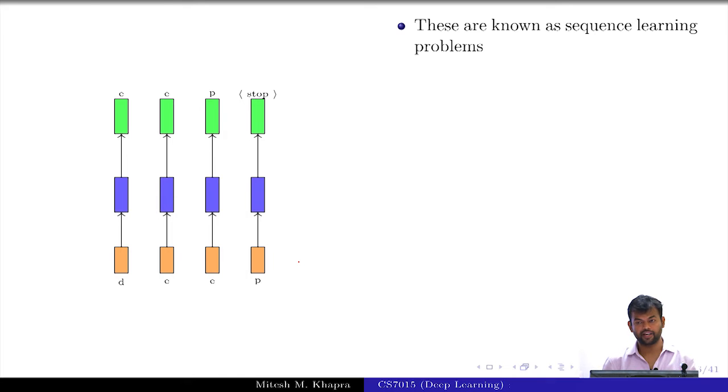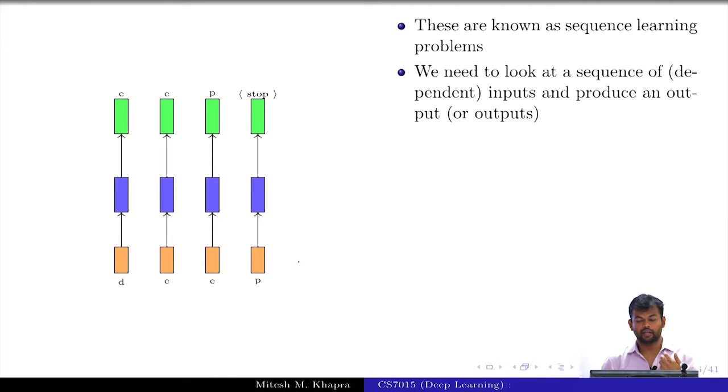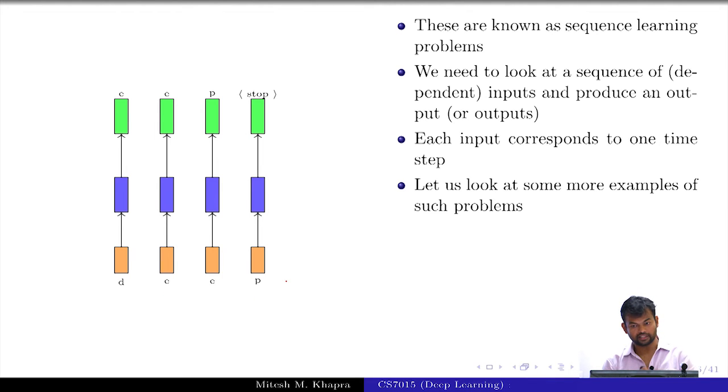These problems are known as sequence learning problems where you have a sequence of inputs and then you need to produce some outputs. Each input actually corresponds to one time step - this is the input at time step 1, time step 2, time step 3, time step 4, and so on. Let us look at some more examples of such sequence learning problems.